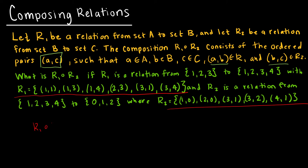I'm looking for R1 composed with R2. Starting with the first element of R1: 1 maps to 1, but I'm not going to write 1 in my composition — I go over to R2 and 1 tells me to map to 0. So (1,0) is a point in my relation. The next one says 1 maps to 3. Where does 3 tell me to go? 3 tells me to go to 1, so I have (0,1,1). But 3 also tells me to go to 2, so I also have the point (1,2).